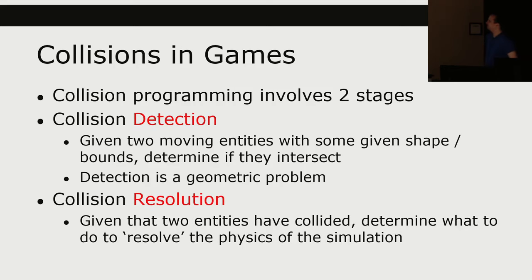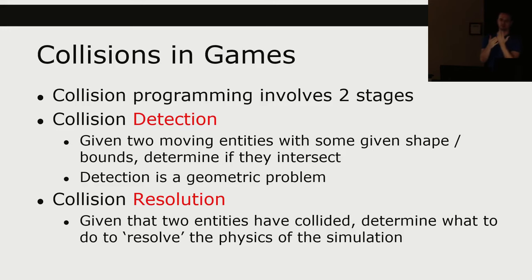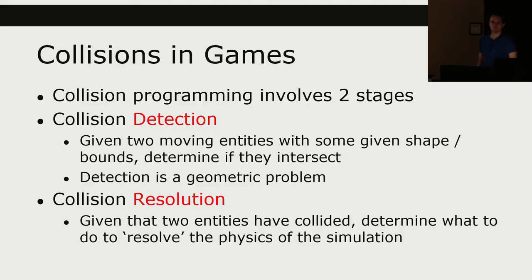After you've detected collisions, you may want to resolve those collisions. Given that two entities have collided — if there's no collision you probably don't have to do anything — but if there was a collision, determine what to do to resolve the physics of that simulation. In the real world, my hands can't really overlap. But in the game world, they can very easily overlap, and if you want that to look like decent physics, you have to do something to resolve that.